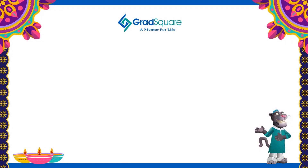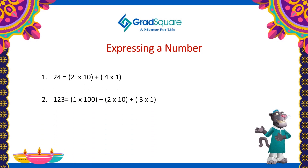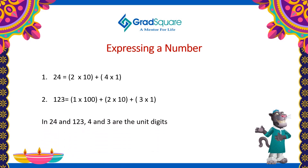What is a unit digit? While expressing a number by its place value, the number occupying the units place or the ones place is said to be the unit digit. In 24 and 123, the unit's place are occupied by 4 and 3, hence said to be the unit digits. Unit digits are generally the rightmost digit or the last digit of the given number.